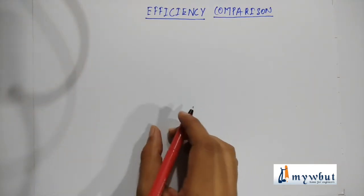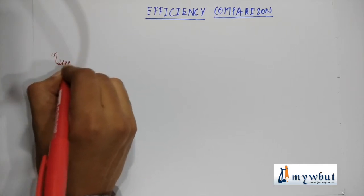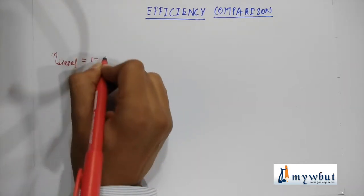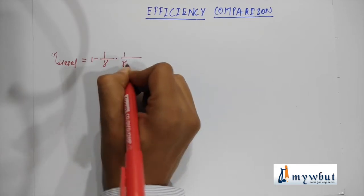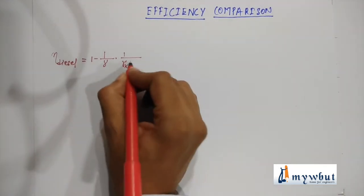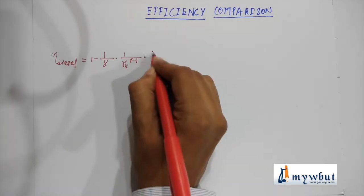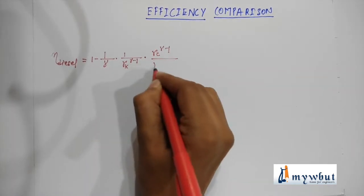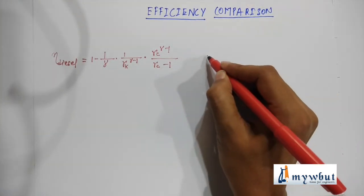The formula for efficiency of a diesel cycle is: η_diesel is equal to one minus one by gamma, into one by rk to the power gamma minus one, multiplied by RC to the power gamma minus one, divided by RC minus one.